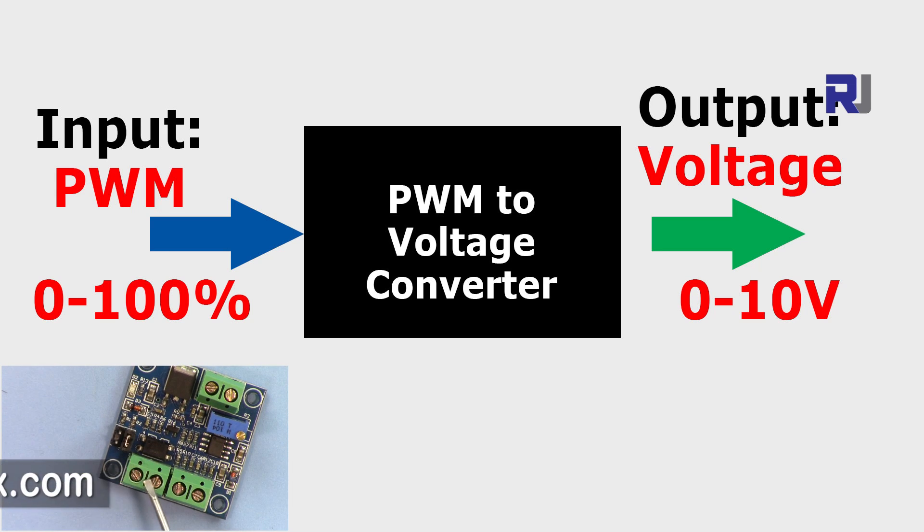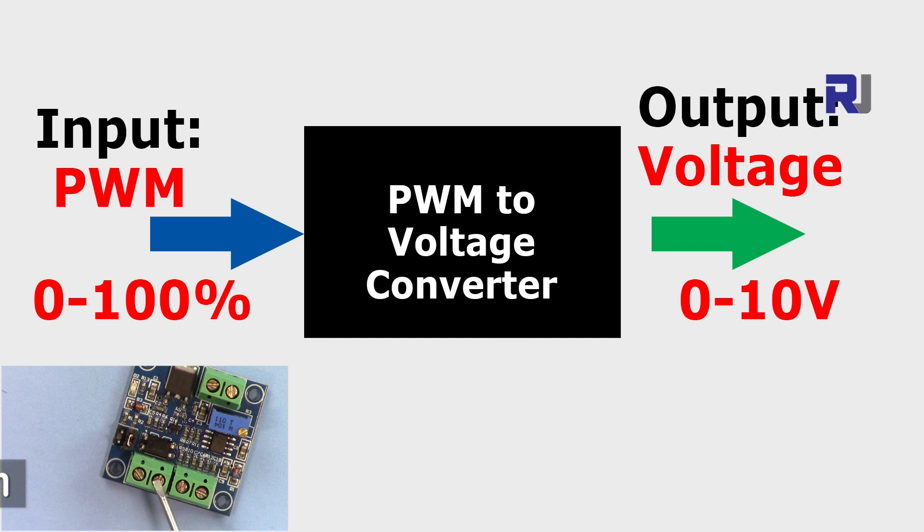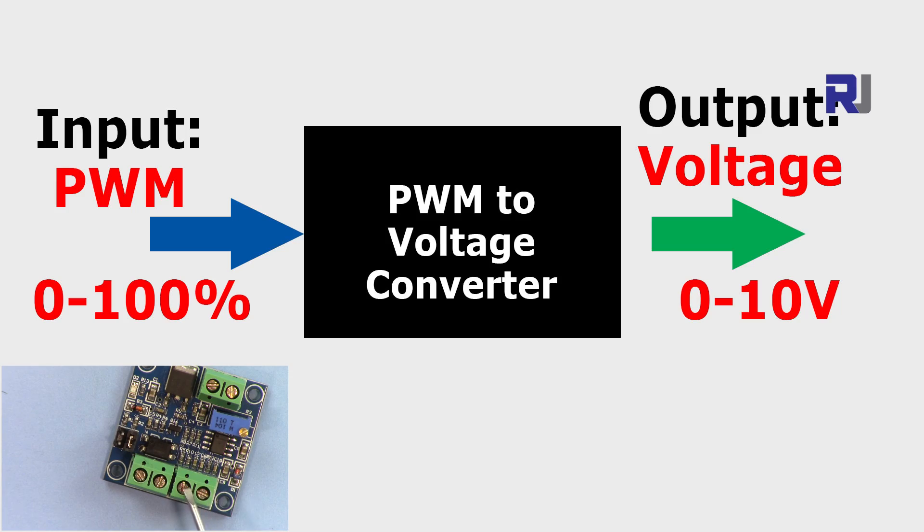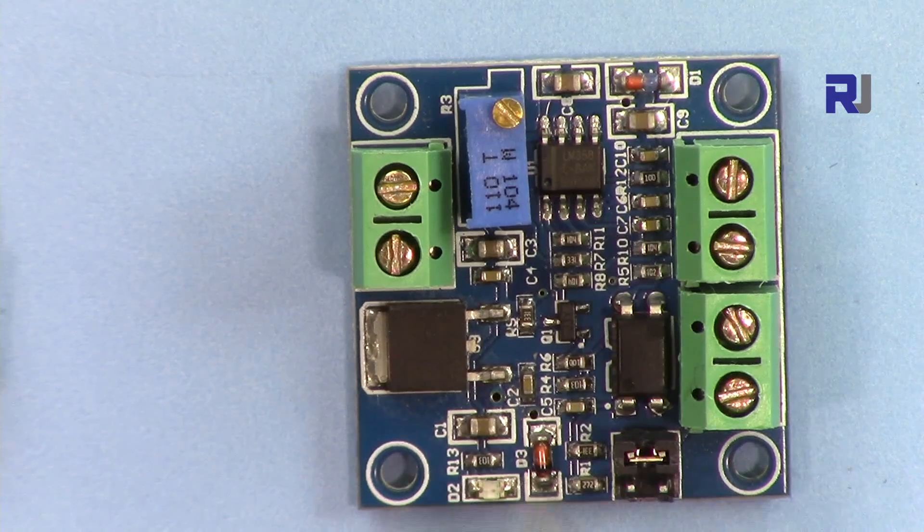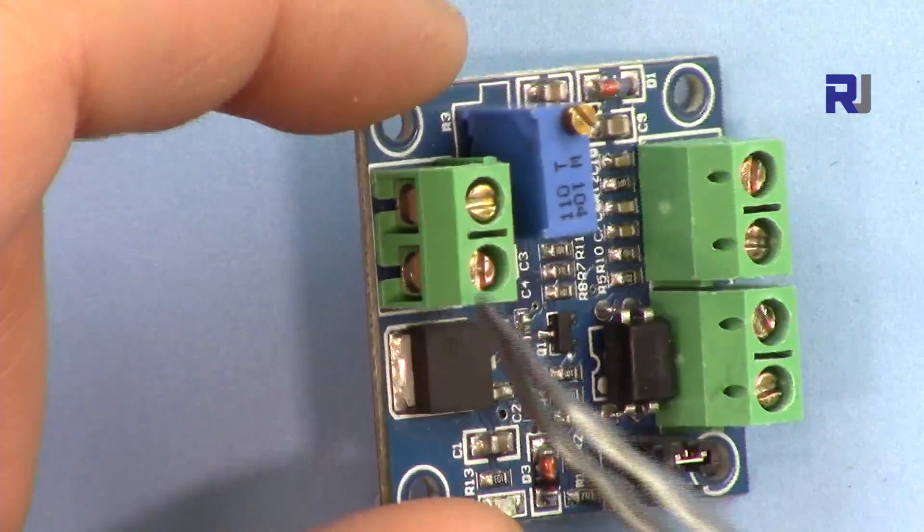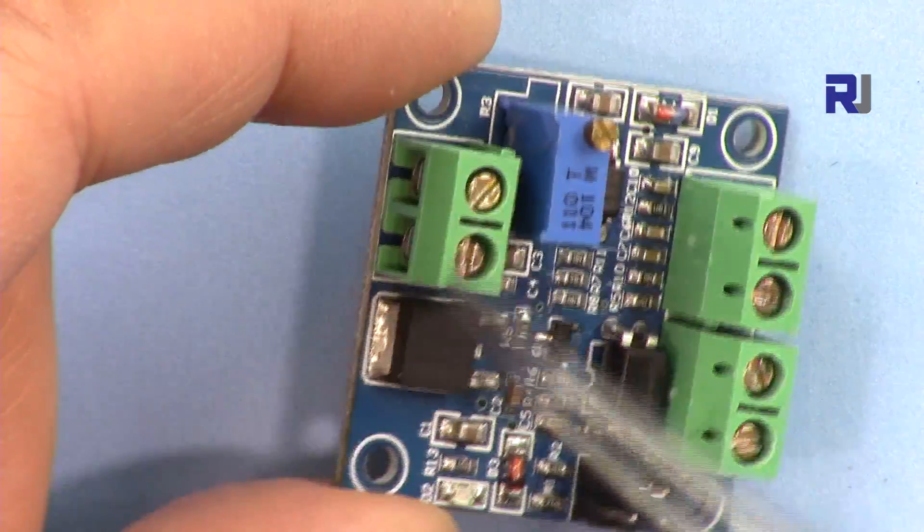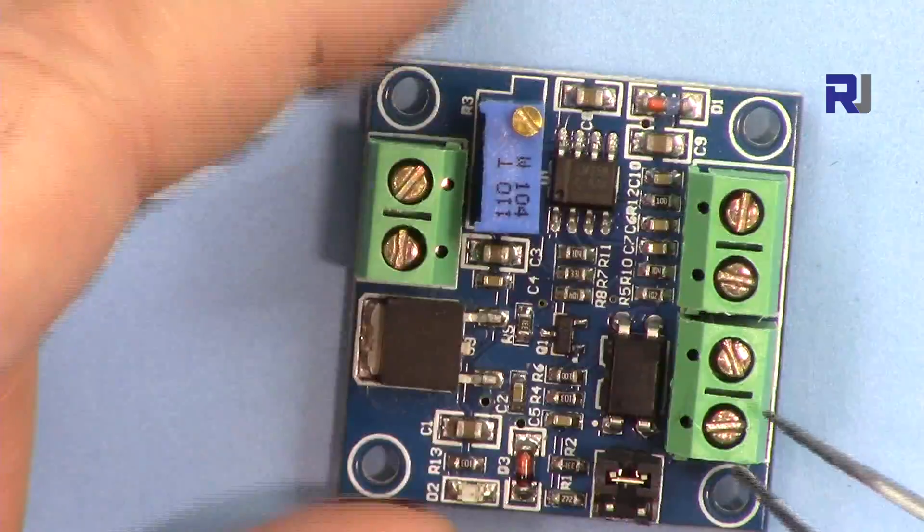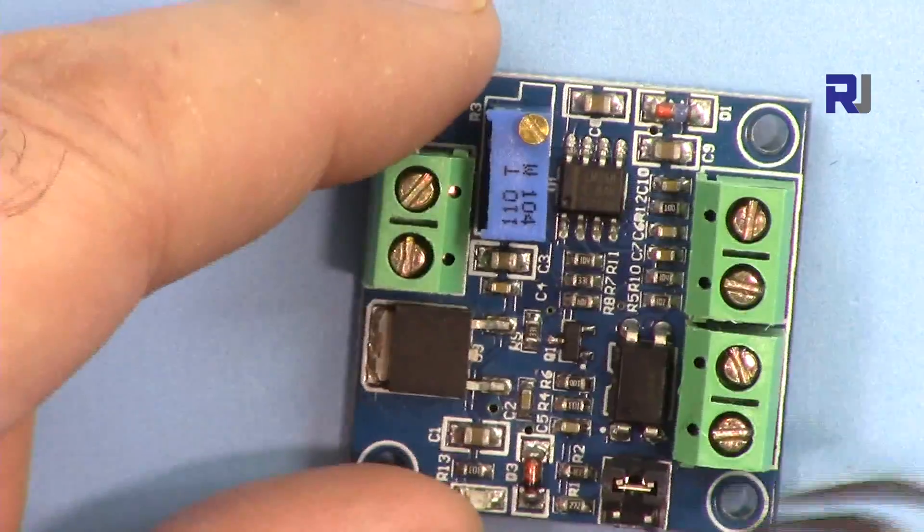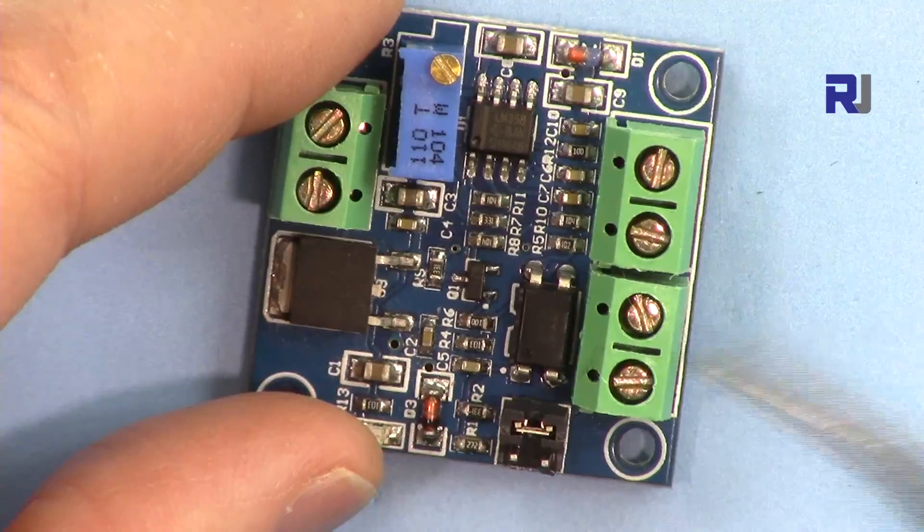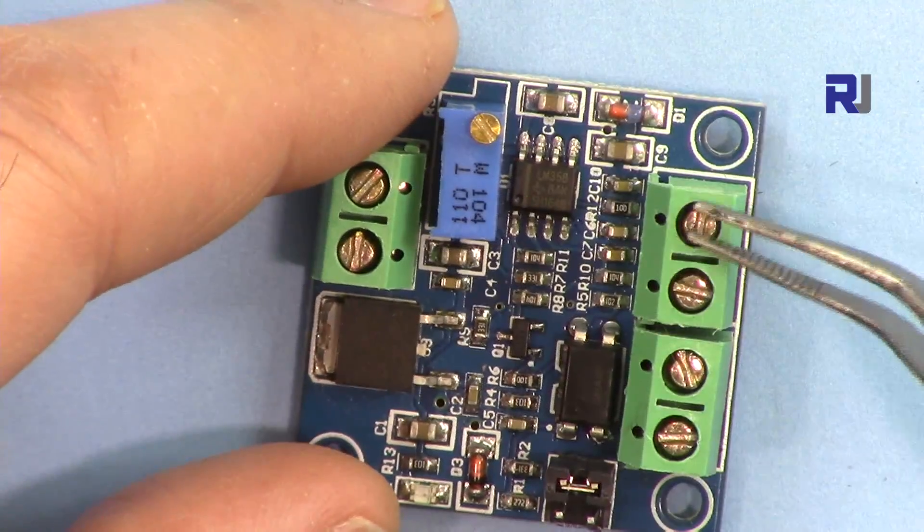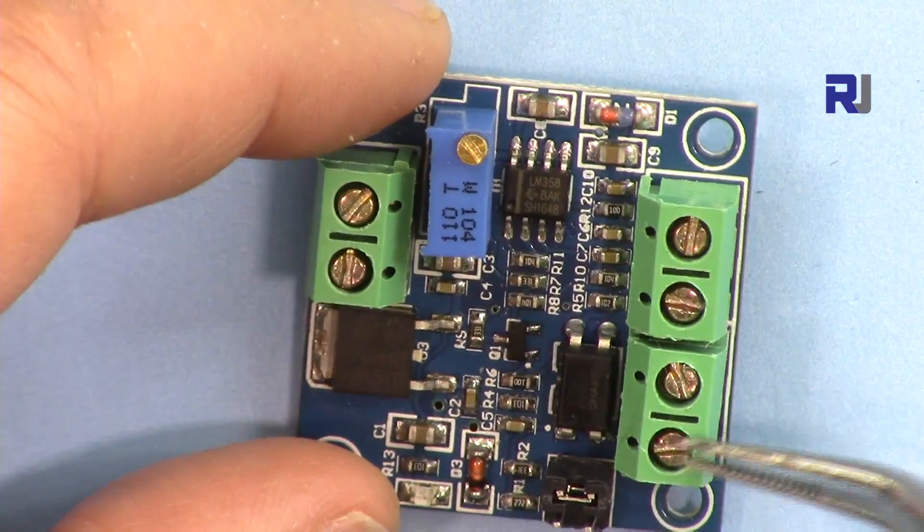The input can be 0 to 100 percent duty cycle in pulse width modulation and the output will be between 0 to 10 volts. This is the module - these two points are for the input which can accept between 12 to 30 volts, and this is the pulse width modulated signal input, and this is the voltage output where that signal will be converted.